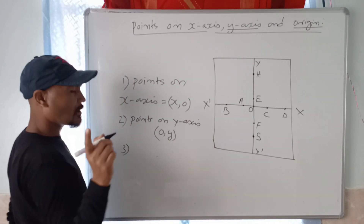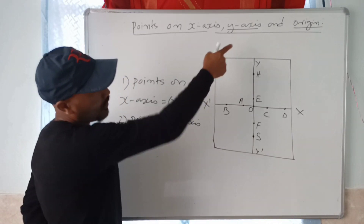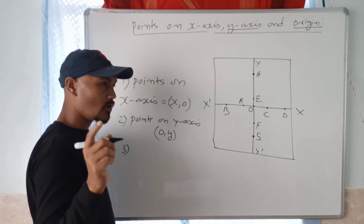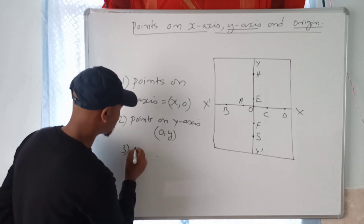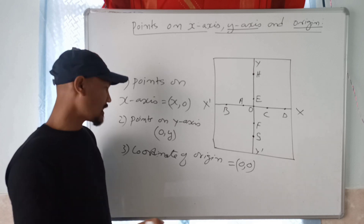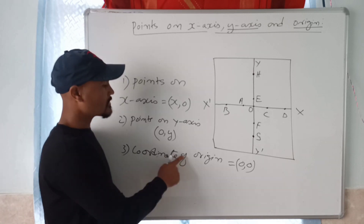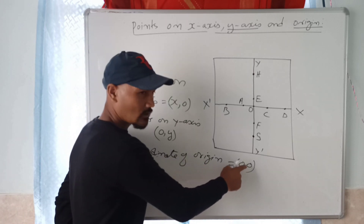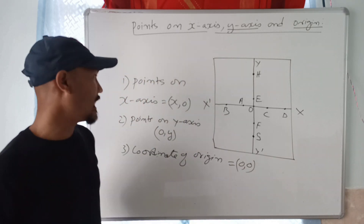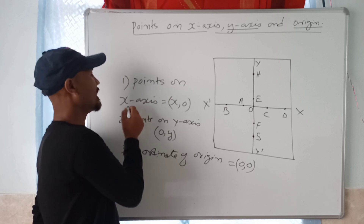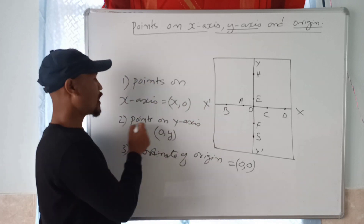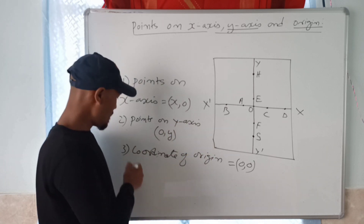So, the points of origin — the coordinates of origin — should be (0, 0). So, the coordinates of origin are (0, 0). The points on x-axis are (x, 0), and points on y-axis are (0, y).